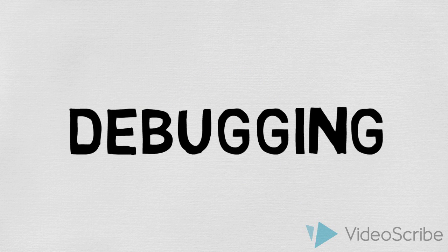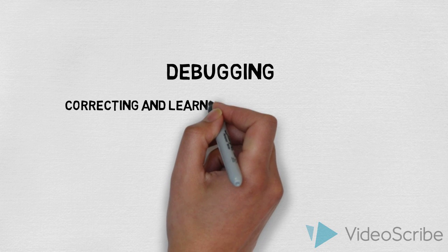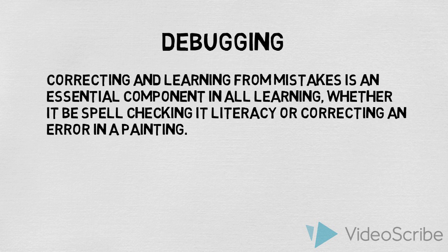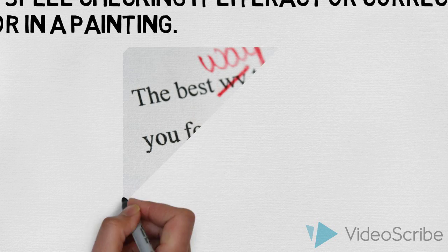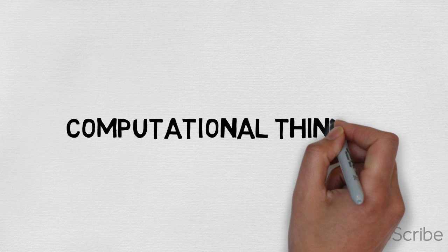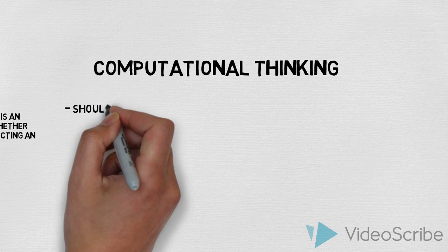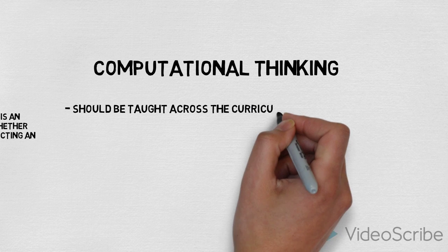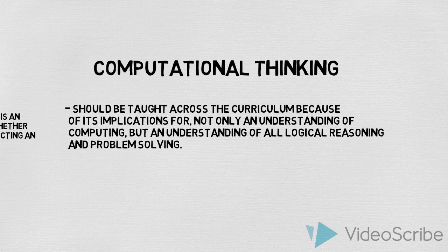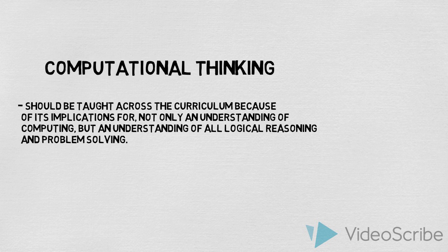Lastly, debugging — the process of correcting errors in programming. Correcting and learning from mistakes is an essential component in all learning, whether it be spell-checking in literacy or correcting an error in a painting. All these aspects comprise computational thinking. From the evidence above, it is clear that computational thinking should be taught across the curriculum because of its implications not only for an understanding of computing, but for an understanding of all logical reasoning and problem solving.